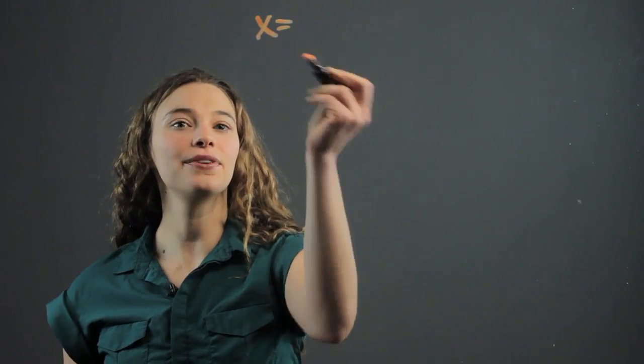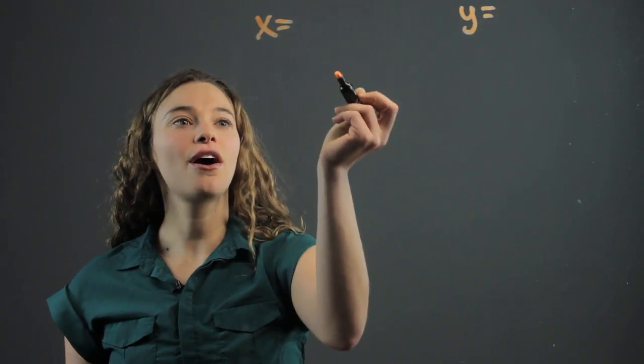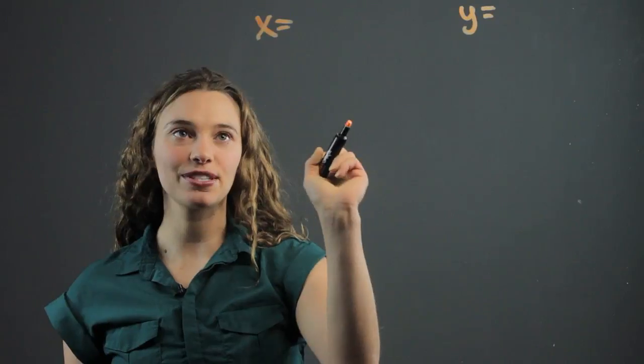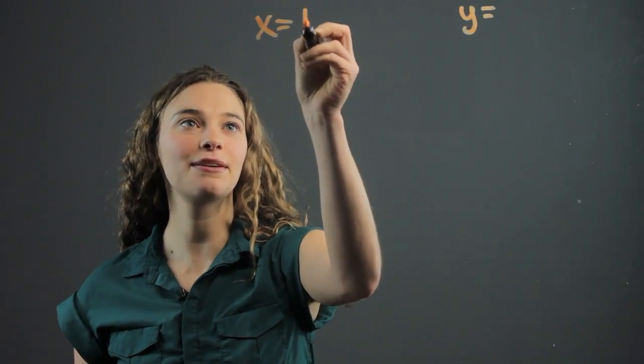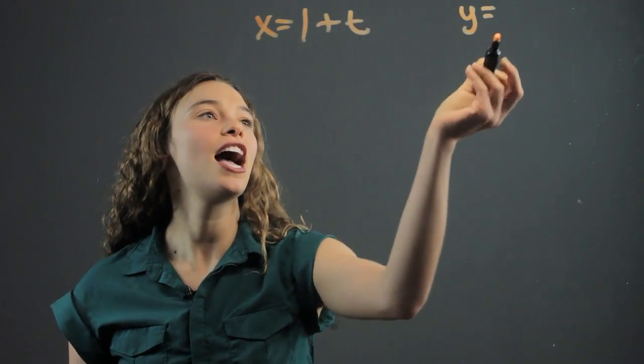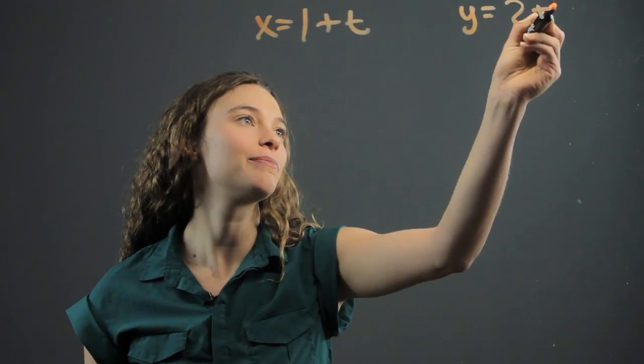So these equations are written as x equals something and y equals something. So they both use the variable t. So let's say we have x equals 1 plus t and y equals 2 plus t.